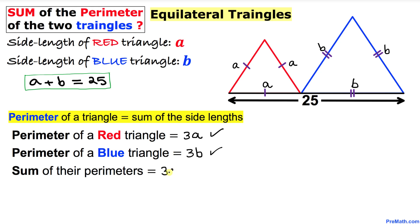So I can write down 3a plus 3b and here I can factor out 3, so we ended up with a plus b inside the parentheses. And now we know that a plus b equals 25, so here I can replace this a plus b by 25. So therefore I can write 3 times 25 and that is going to give us 75 units.